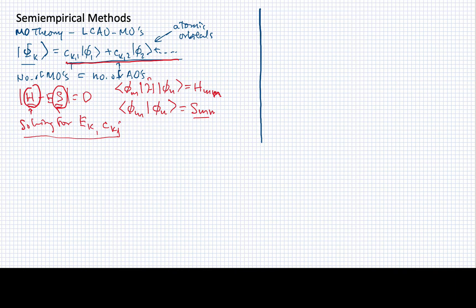I'll have H11 minus E S11 in the upper left-hand corner. H11 and S11 are numbers, the E is what we're solving for. Next one down would be H21 minus E S21, and so forth. Down here, if the number of atomic orbitals I'm including is N, then I would have HN1 minus E SN1.